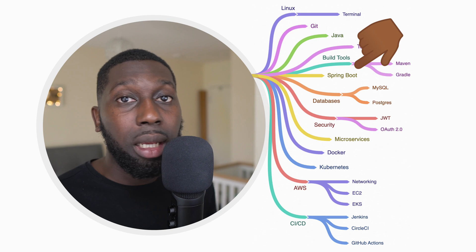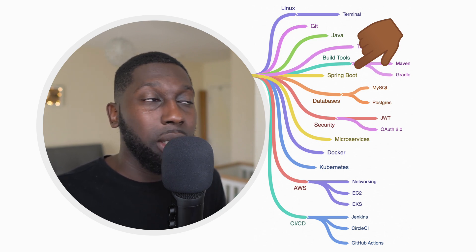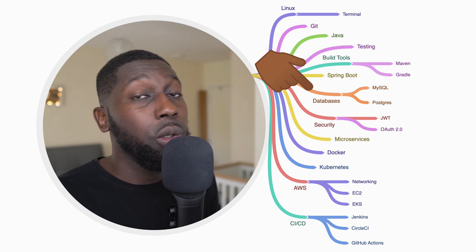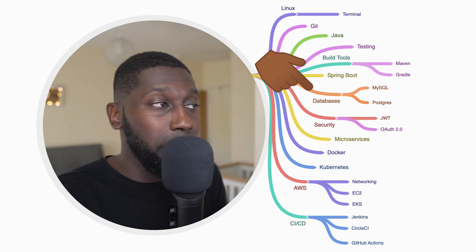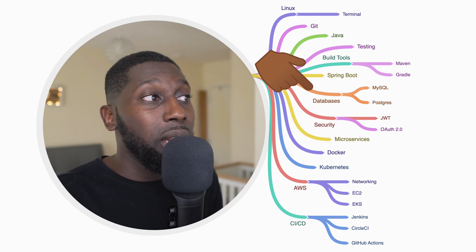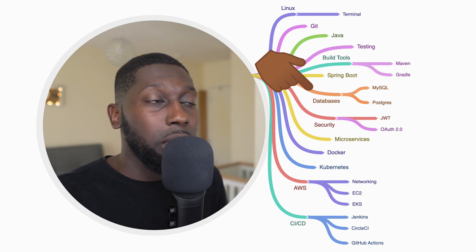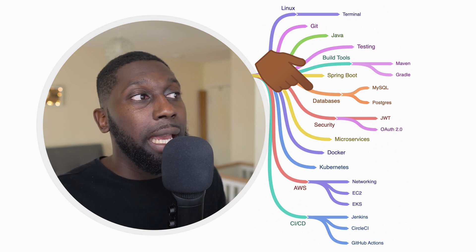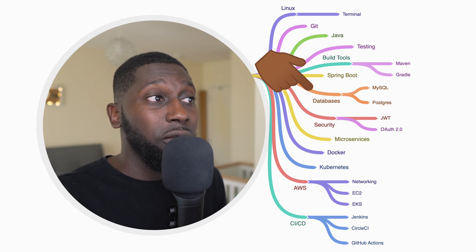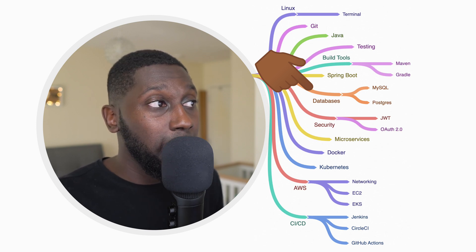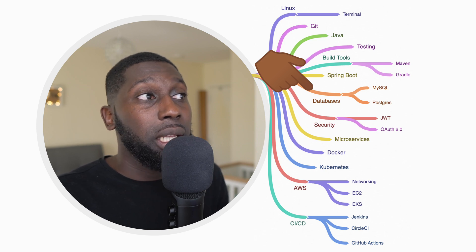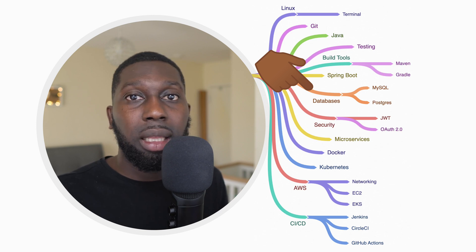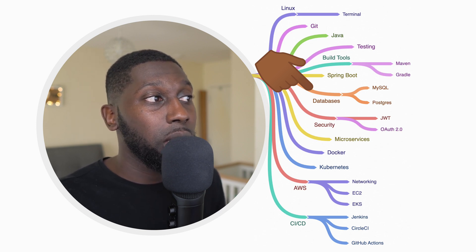Java is a language for the backend, mainly for building APIs. So how do you store data? You need to use a relational database. I really advise you start with a relational database. Most startups will use Postgres or MySQL, but I'd say use Postgres — the documentation is amazing and there are a bunch of resources out there. Understand queries: SELECT, DELETE; understand indexes, understand joins, and all that good stuff.